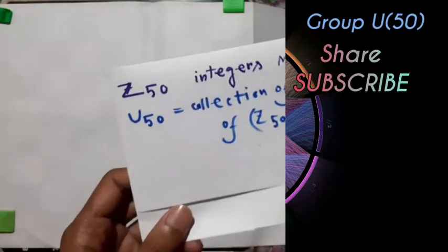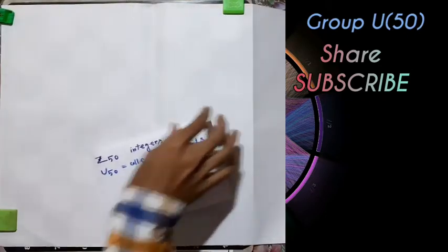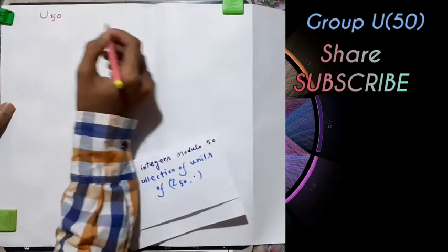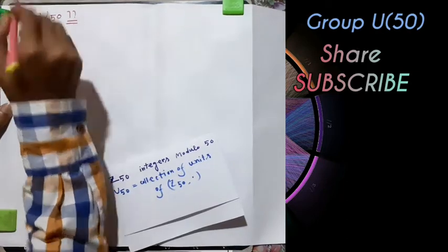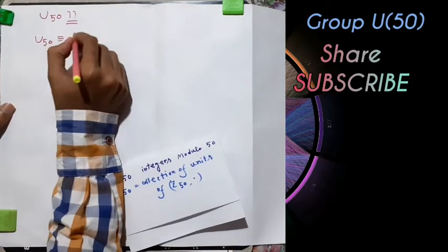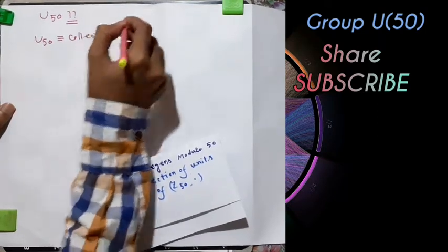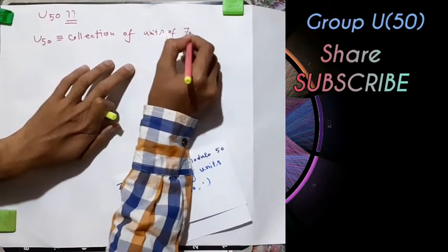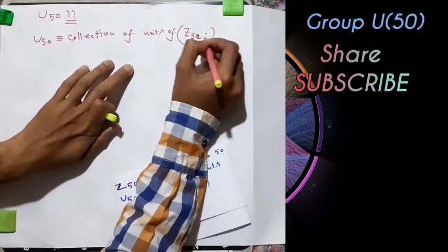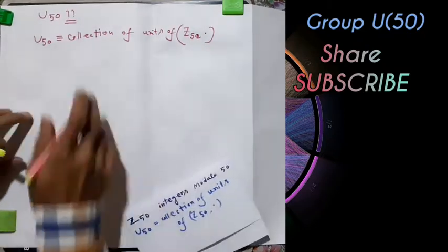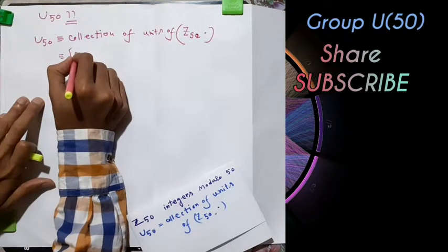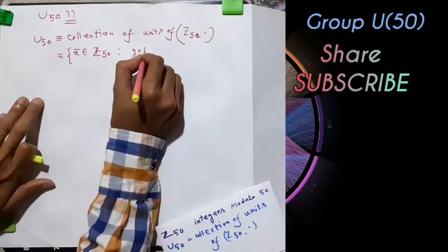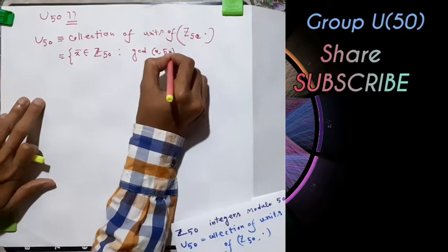U50 is constructed as the collection of units of Z50 under multiplication. Z50 with multiplication is a commutative monoid. The collection consists of all x-bar in Z50 such that GCD(x, 50) = 1.